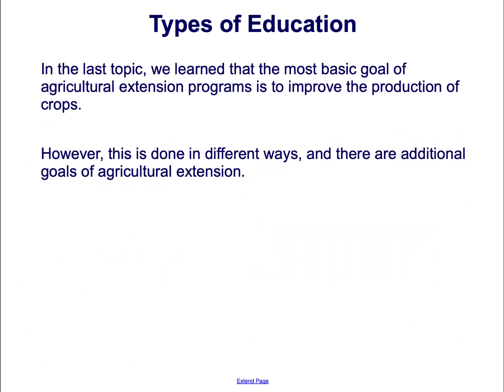Types of Education. In the last topic, we learned that the most basic goal of agricultural extension programs is to improve the production of crops. However, this is done in different ways and there are additional goals of agricultural extension.